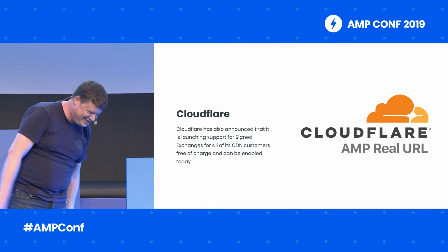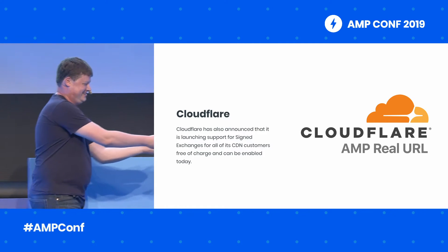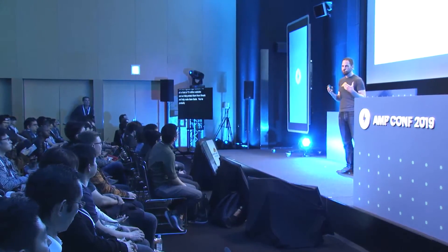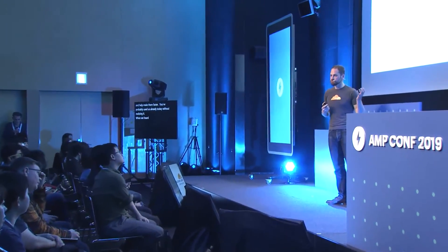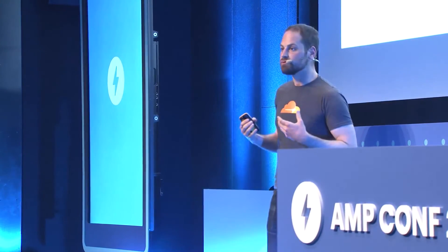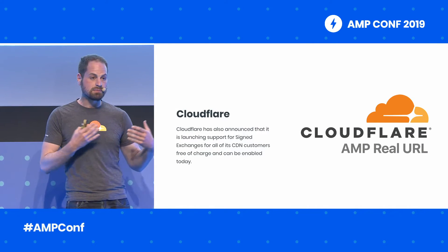At this point I'd like to introduce Zach Bloom from Cloudflare. Cloudflare is a CDN — it's also a global edge network. We sit in front of 15 million websites and help protect them from threats and make them faster. You've probably used Cloudflare today already without realizing it. When we heard about signed exchanges — described yesterday as the solution to the single biggest problem with AMP — we started thinking: is there a way we can solve this problem without requiring people to do cryptography, provision certificates, and do all these steps that aren't particularly easy?